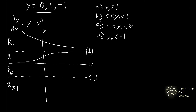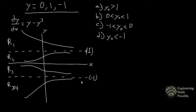For region 3 (between 0 and -1), plug in y = -0.5: the result is negative, so it's a negative slope going downward. For region 4 (y < -1), plug in y = -2: the result is positive, so the slope is going upward. These are your typical solutions for all four regions of this autonomous first order differential equation.